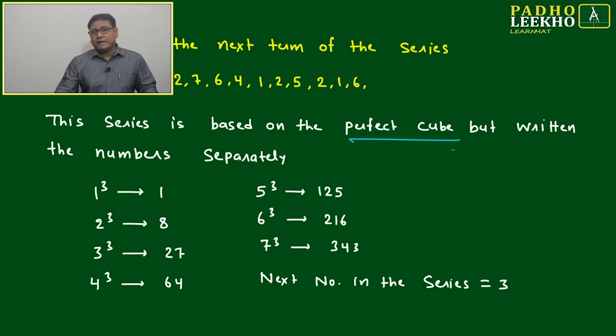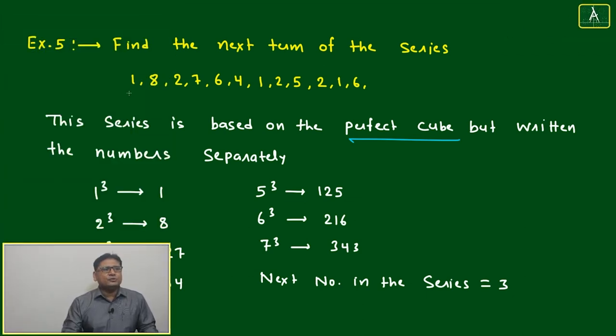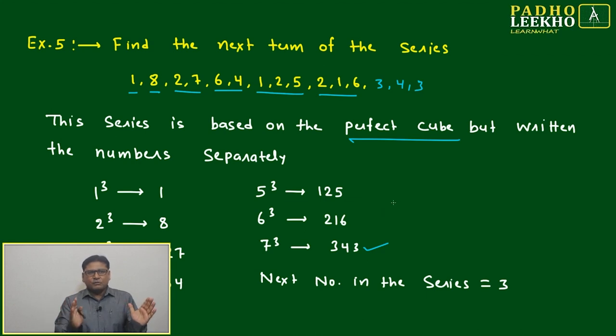It is written as consecutive terms—this is your 1³, 2³, this is your 3³, 4³, 5³, 6³. Next will be 7³, which is 343. This means the next term will be 3, 4, 3—whatever perfect cube number you are getting.